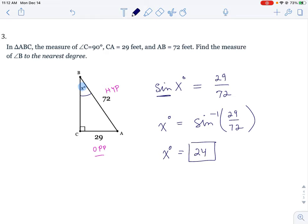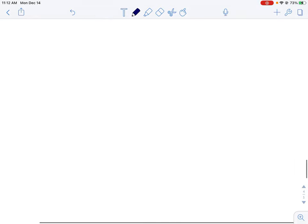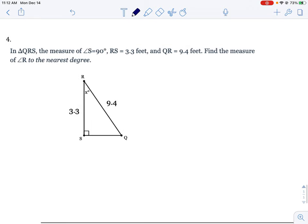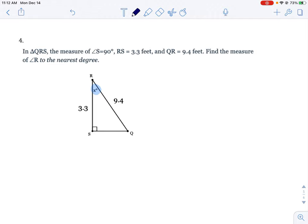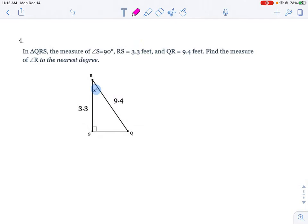And then finally, number four. Again, I just stole these from Delta Math, you'll probably have different problems. Again I'm looking for an angle. This time though, we gave you the hypotenuse but we gave you the adjacent. So this is the adjacent is 3.3.